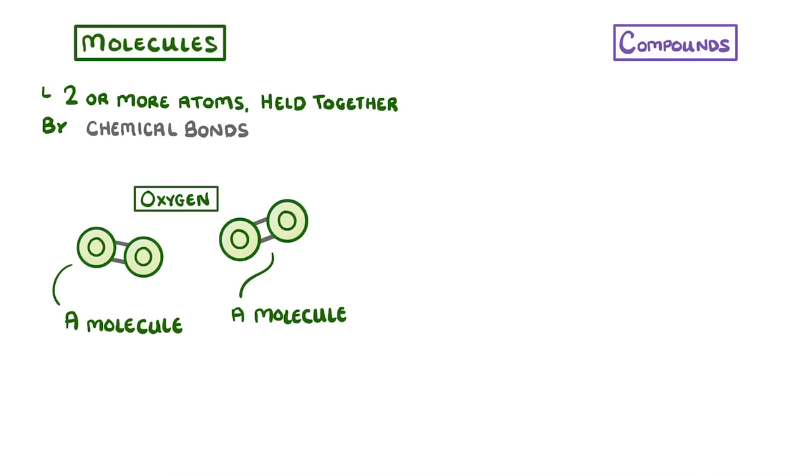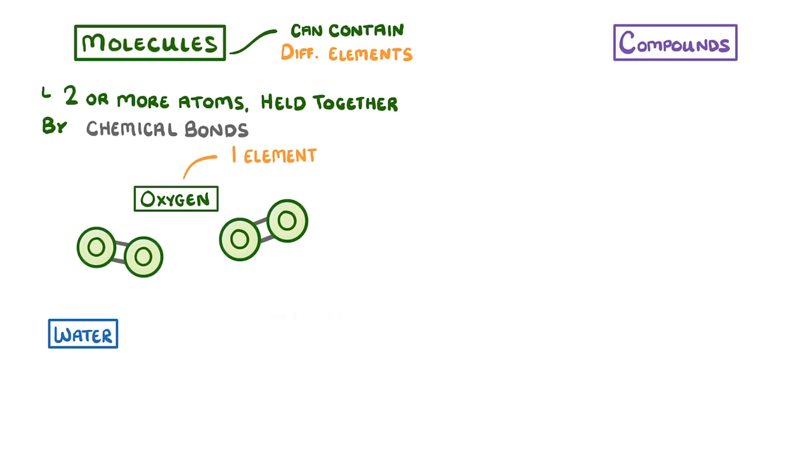Now even though these oxygen molecules consist of just one element, molecules can contain multiple different elements. For example, in water molecules, one atom of oxygen is bonded to two atoms of hydrogen.